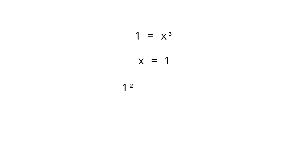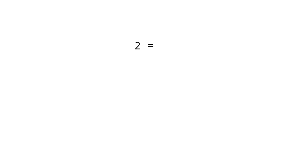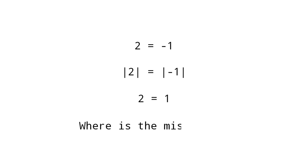Substituting x equals 1 into equation 1 gives 1 squared plus 1 plus 1 equals 0, so 3 equals 0. Subtracting minus 1 from both sides gives 2 equals minus 1. Taking the magnitude gives |2| equals |minus 1|, or 2 equals 1. Where is the mistake?